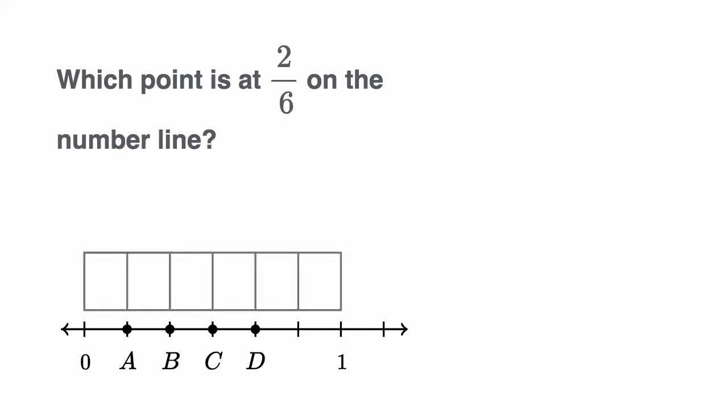Let's imagine that this rectangle represents a whole. And notice, it is divided into six equal sections. So each of those sections is a sixth. And so if I start at zero, how many would I fill in to get two-sixths? And what would be the corresponding point on the number line?